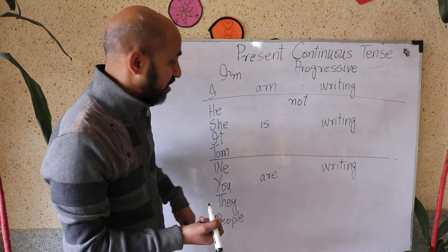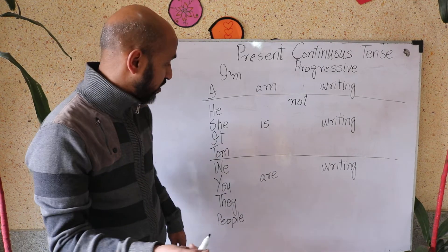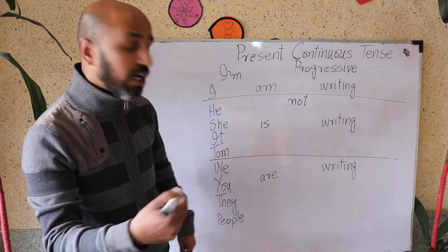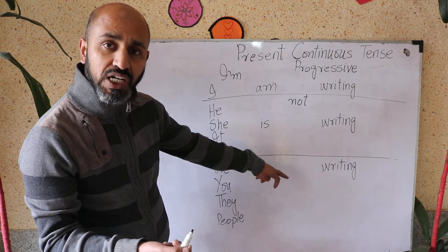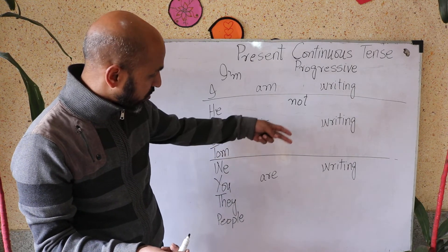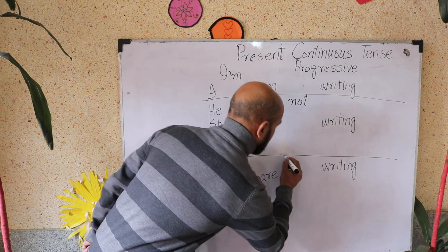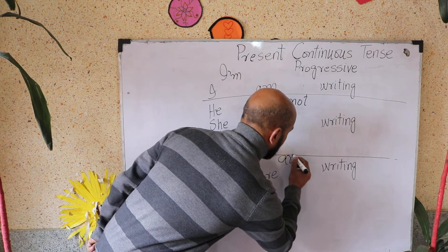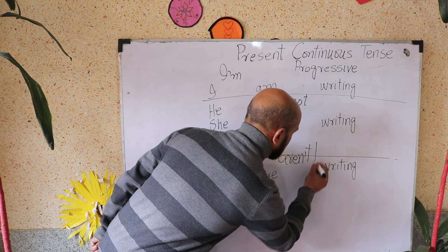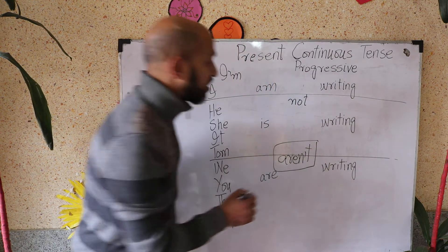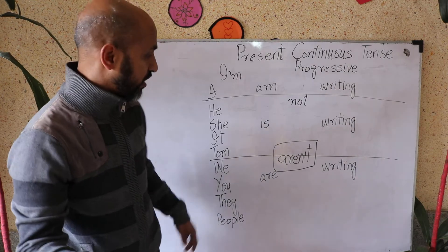People are not writing, or 'people aren't writing'. We are not writing, or 'we aren't writing'. You are not writing, they are not writing, or 'they aren't writing'. Note that 'aren't' is pronounced like 'aren't' — not 'aren't'. You say 'we aren't writing'.